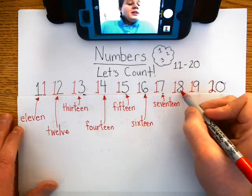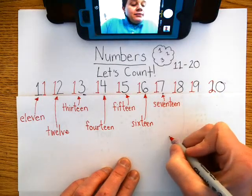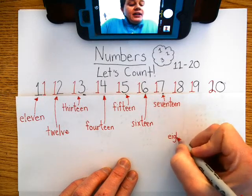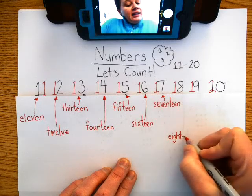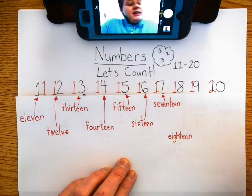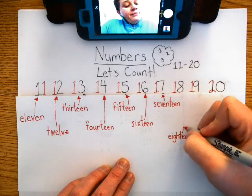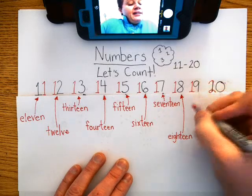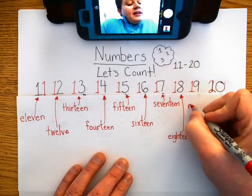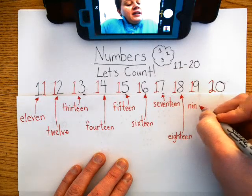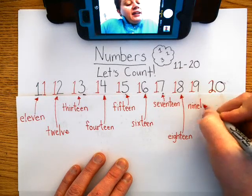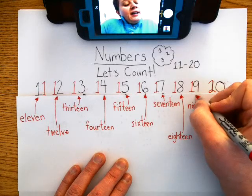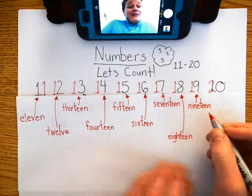Then we have 18, E, I, G, H, T, E, E, N, 18. Next we have 19, N, I, N, E, T, E, E, N, 19.